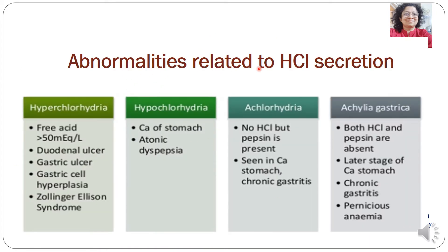The abnormalities related to HCl secretion are categorized into four kinds: hyperchlorhydria, when there is increased HCl secretion; hypochlorhydria, when there is decreased HCl secretion; achlorhydria, when there is no HCl secretion; and achylia gastrica, when both HCl and pepsin are absent. Hyperchlorhydria occurs when free acidity exceeds 50 millimoles per liter and is seen in duodenal ulcer, gastric ulcer, gastric cell hyperplasia, and Zollinger-Ellison syndrome.